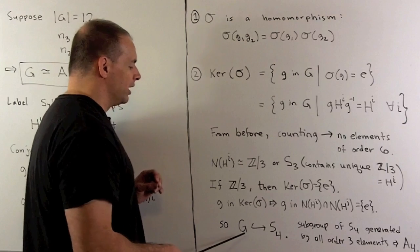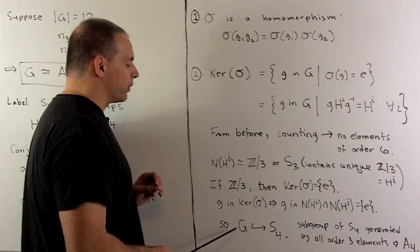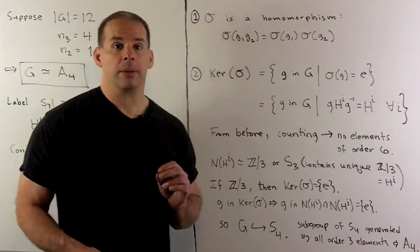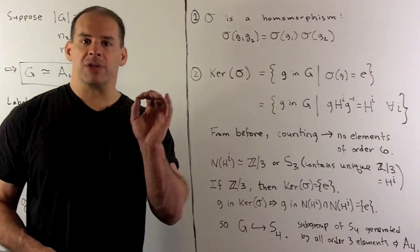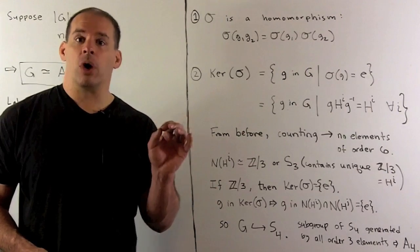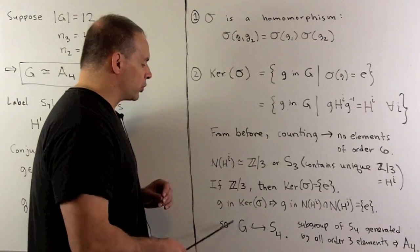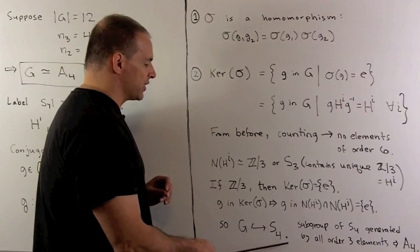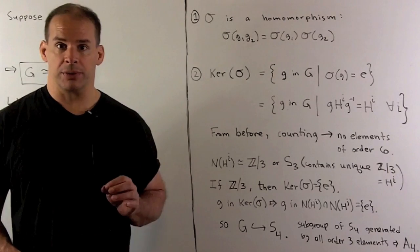G is going to contain 8 elements of order 3, which are all the elements of order 3 in S_4. The elements of order 3 in S_4 generate A_4. Since we're starting with a group of order 12, we're going to hit all of A_4, and that gives us our isomorphism.